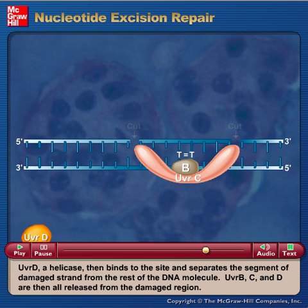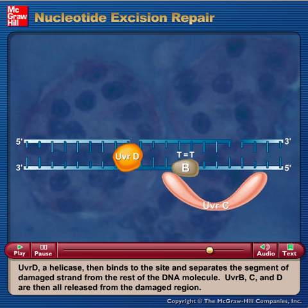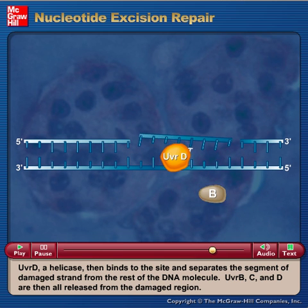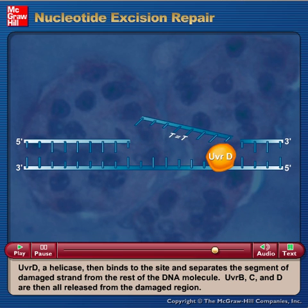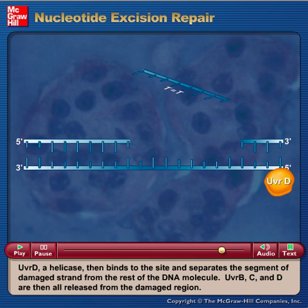UVRD, a helicase, then binds to the site and separates the segment of damaged strand from the rest of the DNA molecule. UVRB, C, and D are then all released from the damaged region.